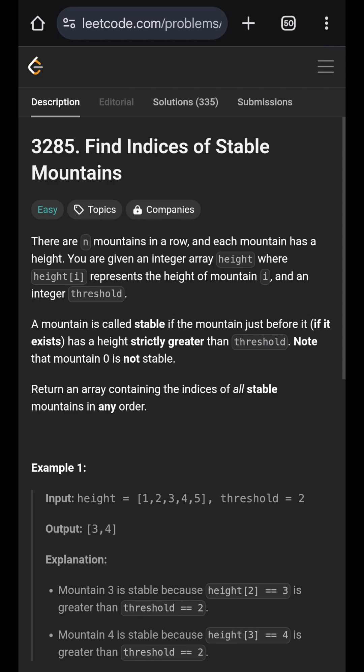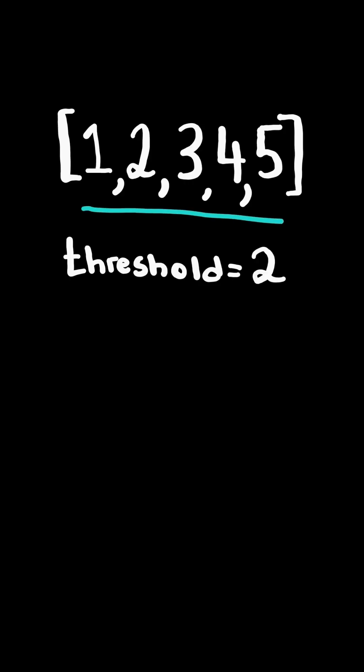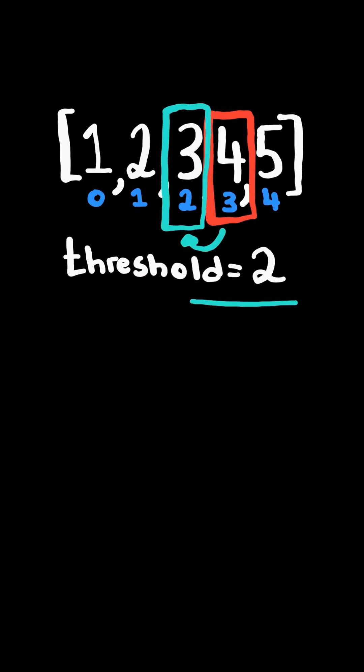Find indices of stable mountains. Given a list of mountain heights and a threshold, consider a mountain at index i. If the mountain before it is strictly greater than the threshold, then the current mountain is a stable mountain.